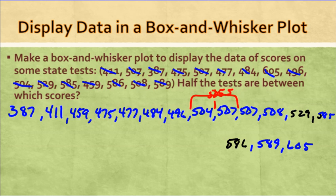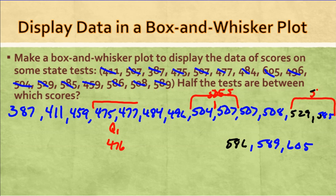With 505 as the median, each half has 8 numbers. The halfway point of the first half — between the 4th and 5th numbers — gives us quartile one: 476. On the second half, the halfway point between the 4th and 5th numbers is between 529 and 585: (529 + 585) ÷ 2 = 557, so quartile three is 557. Half the tests are between 476 and 557.